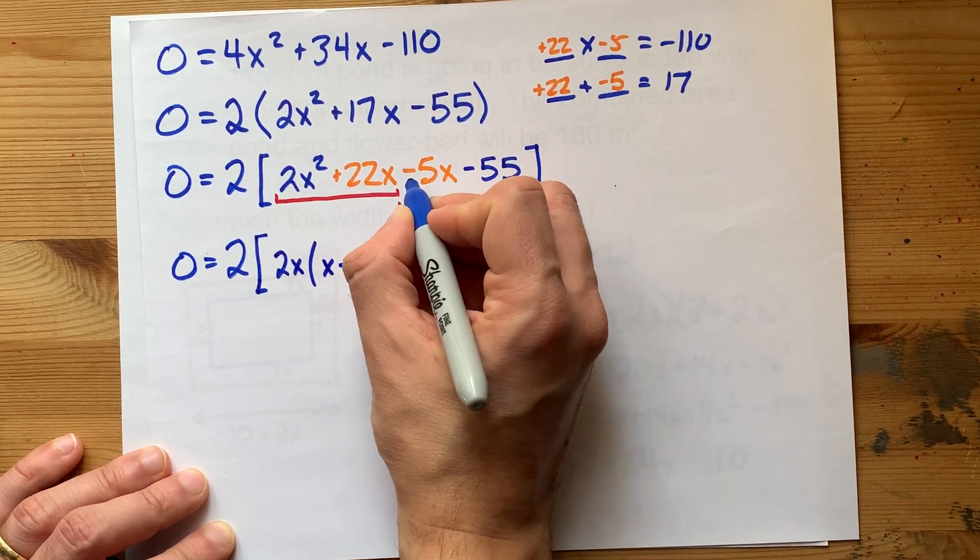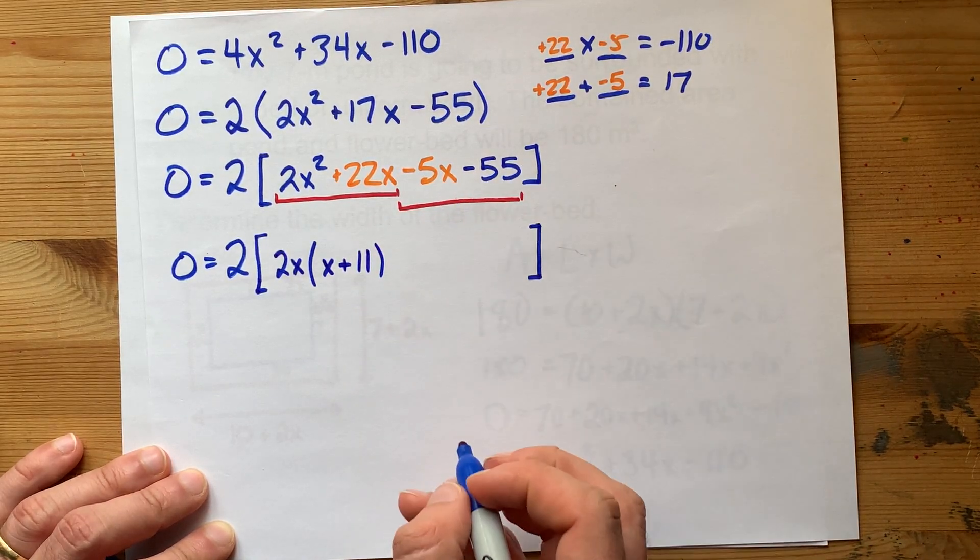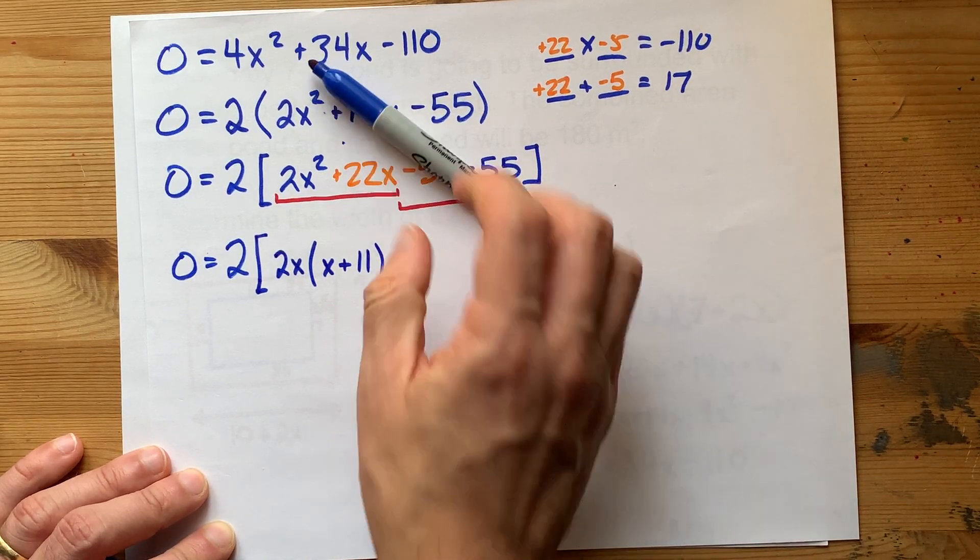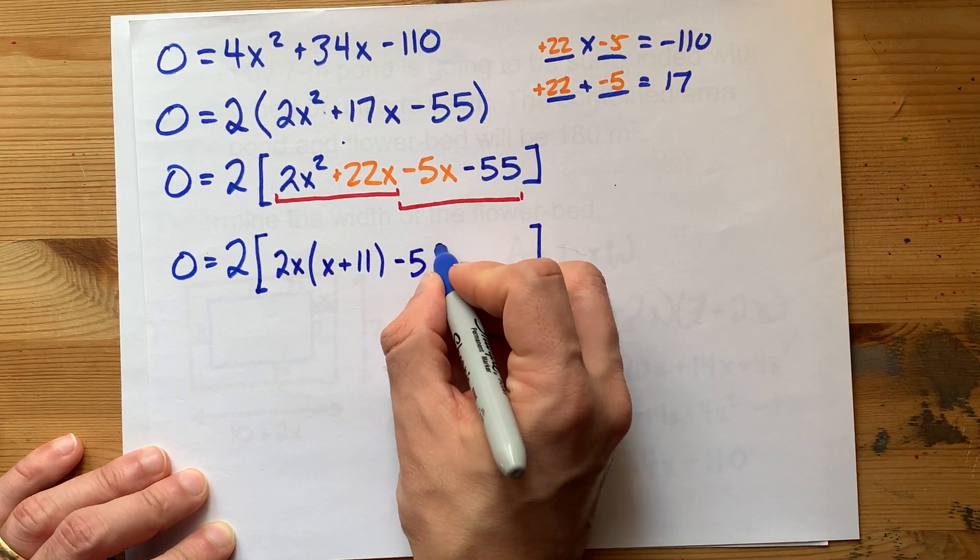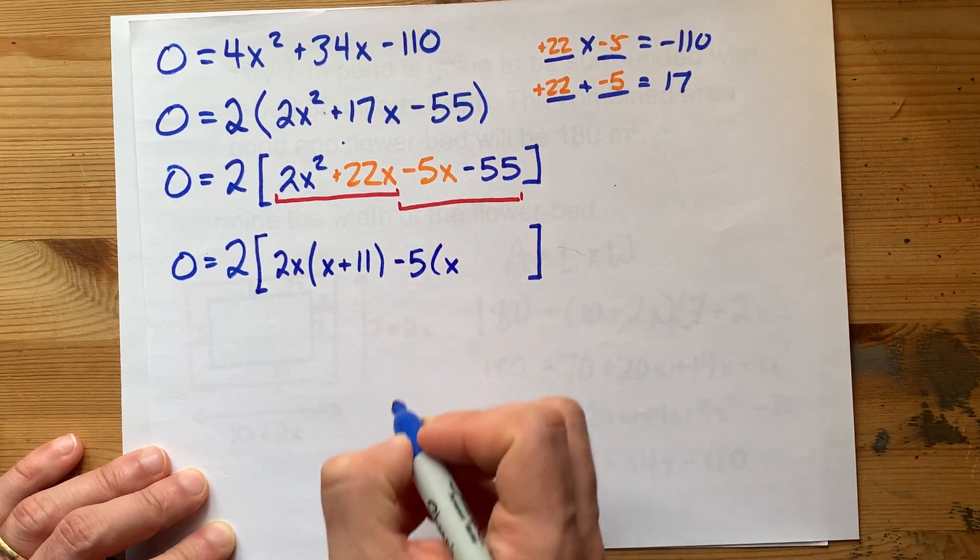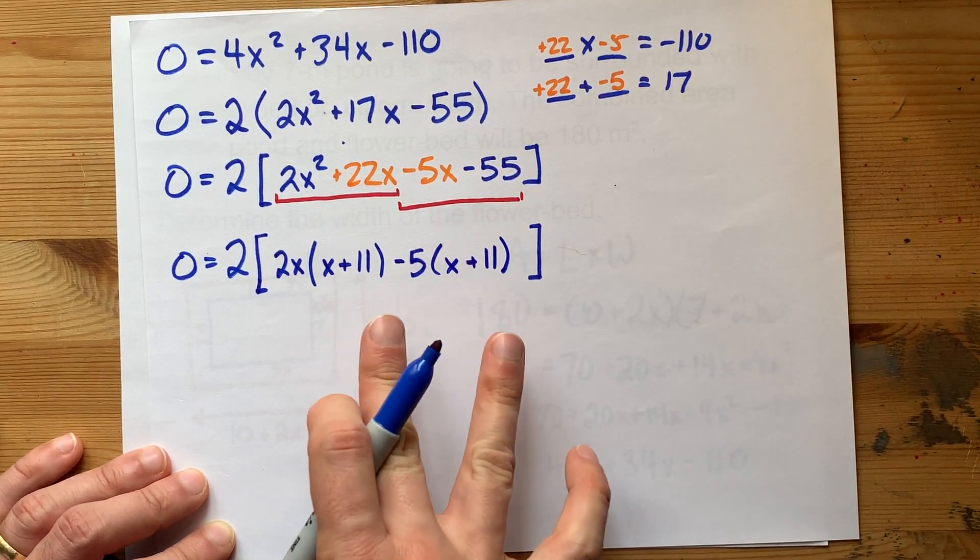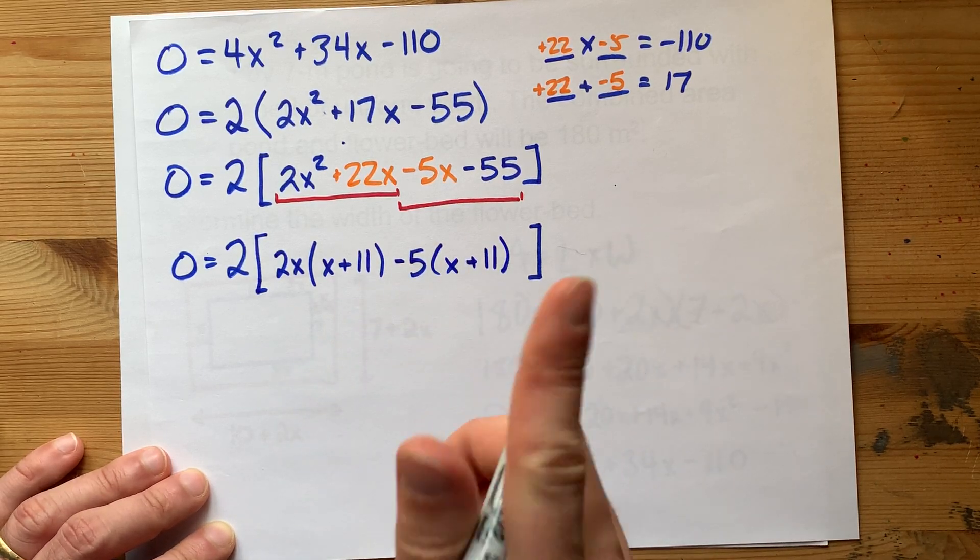And now what's common between negative 5x and negative 55? I'm thinking it's negative 5. Negative 5x without negative 5 is just x. Negative 55 divided by negative 5 is plus 11. And you'll know you've done it right if your brackets match, which mine do.